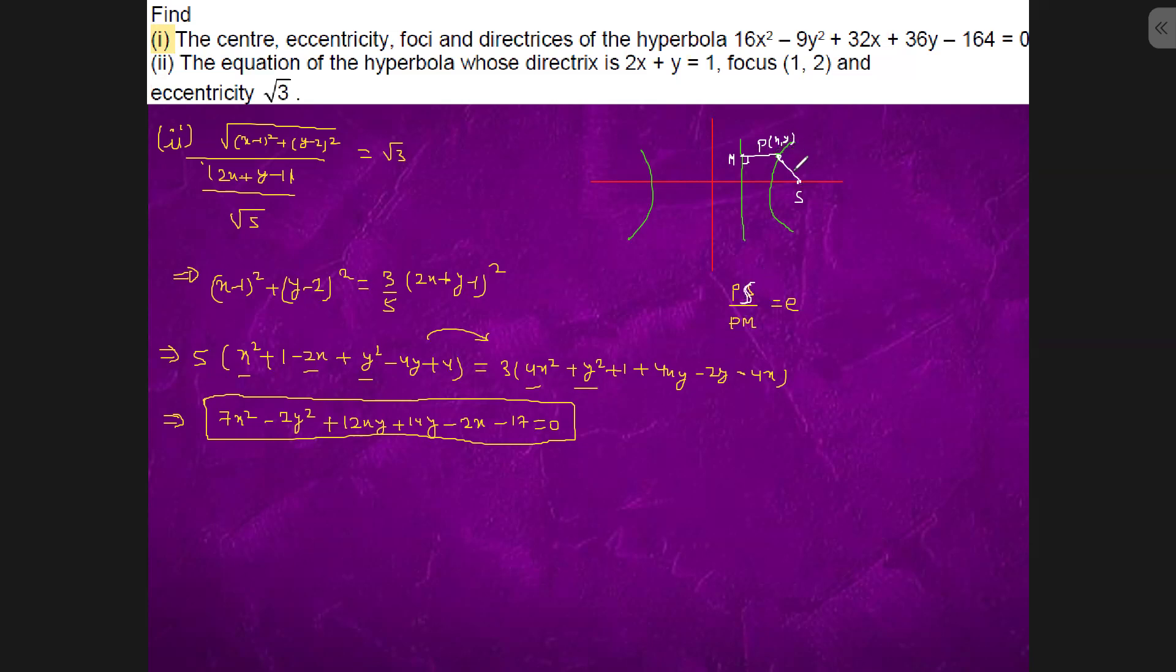So PS is what? Root under x minus one whole square. This is focus. Root under x minus one whole square plus y minus two whole square upon the perpendicular distance, which is mod 2x plus y minus one upon root 5 (2 squared plus 1), equals to root 3.